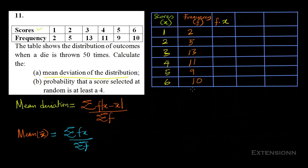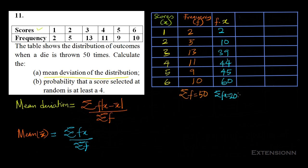Now let's calculate fx for each row: 2×1=2, 5×2=10, 13×3=39, 11×4=44, 9×5=45, 10×6=60. Summing these: Σfx = 2 + 10 + 39 + 44 + 45 + 60 = 200.